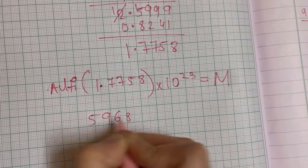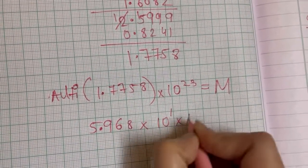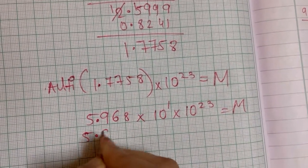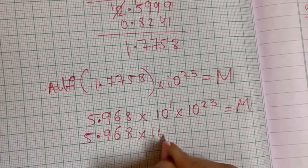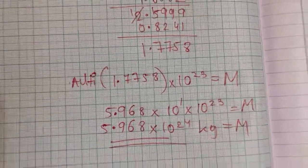5 9 6 8, after one digit you'll put point into you have 1 over here, so 10 raise to 1 into 10 raise to 23 is my M. So I'll write it like this: 5.968 into 10 raise to 24 kilogram is the mass of my Earth.